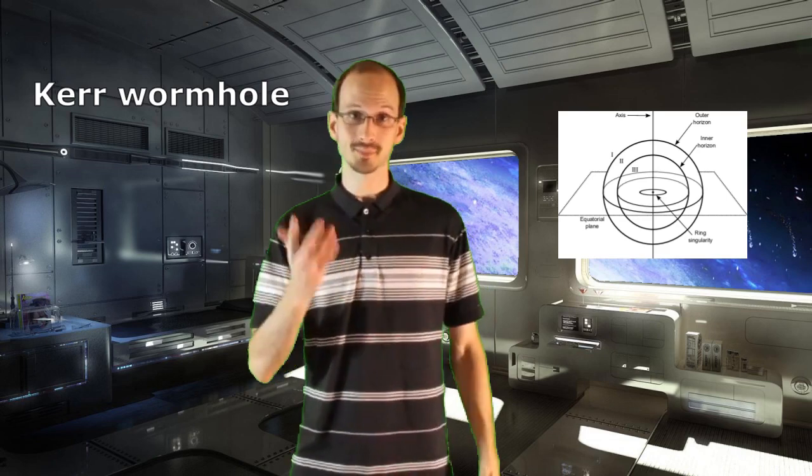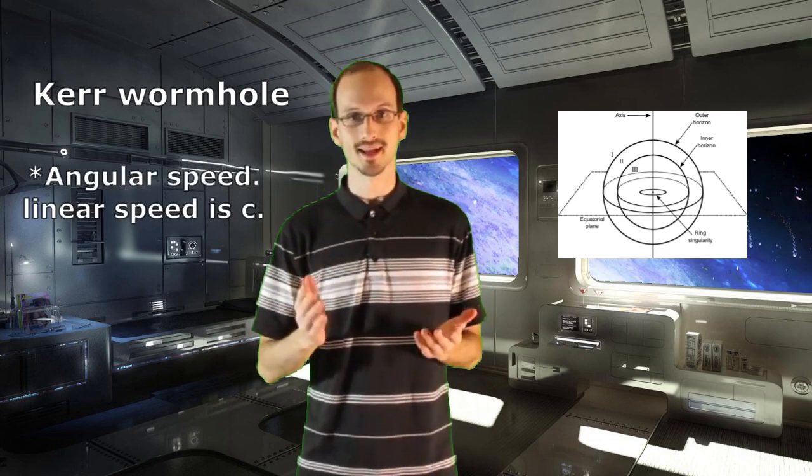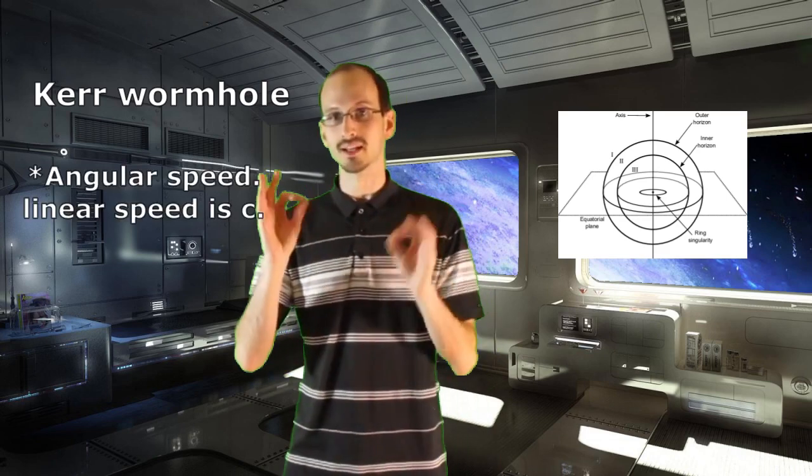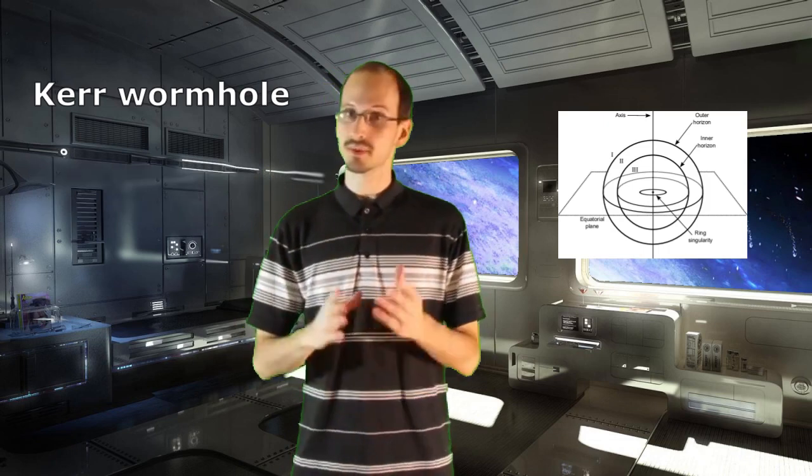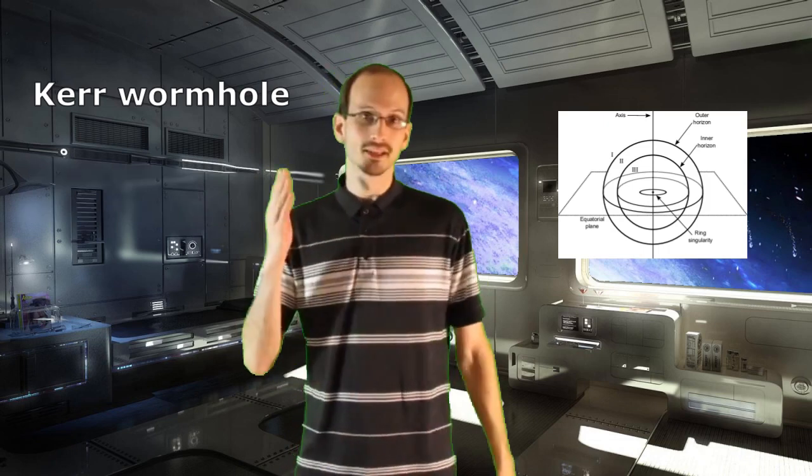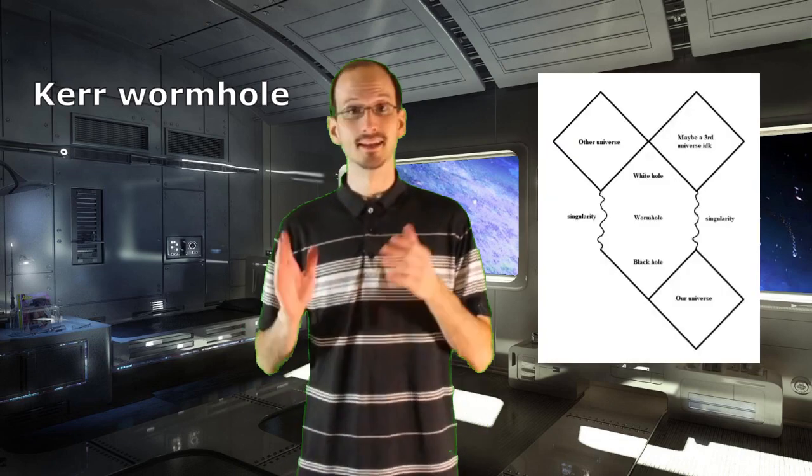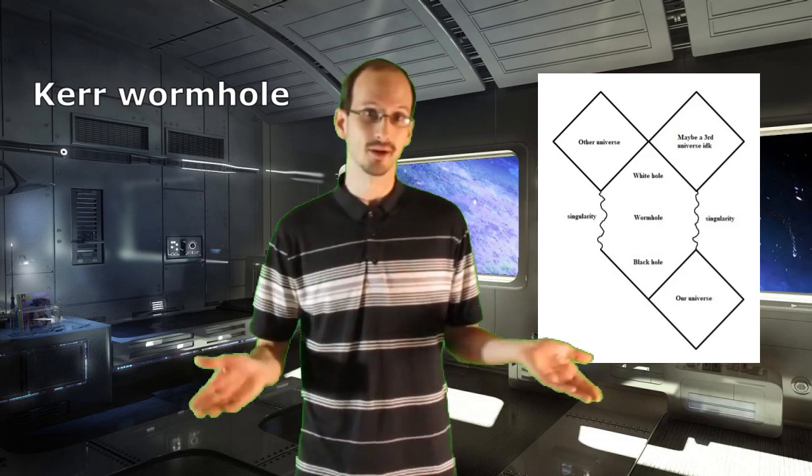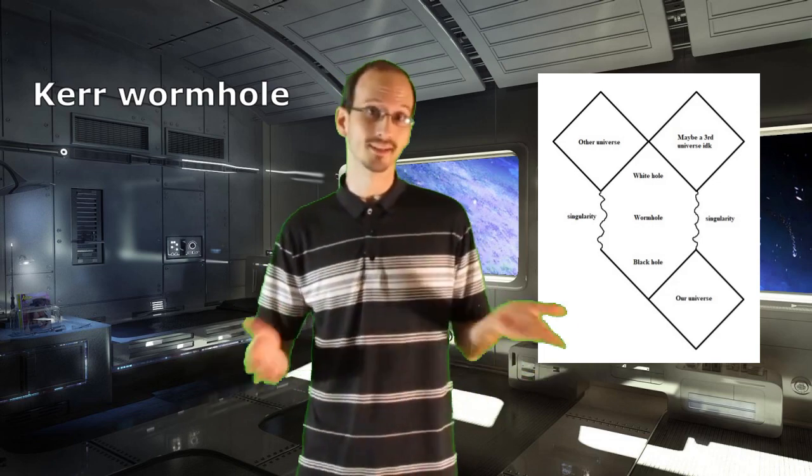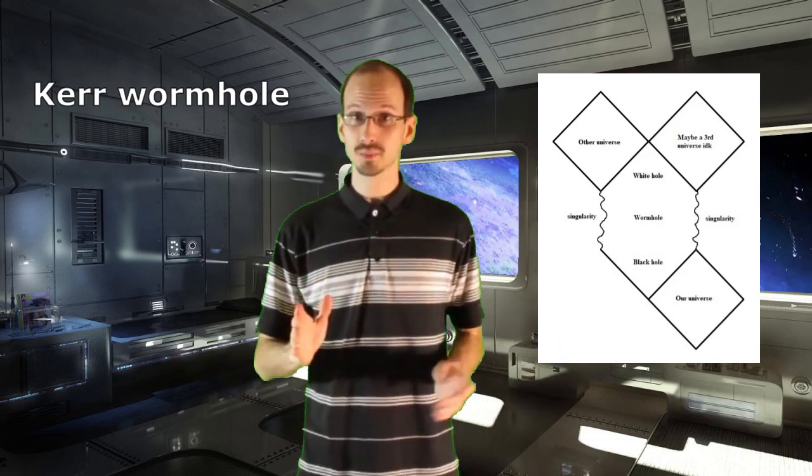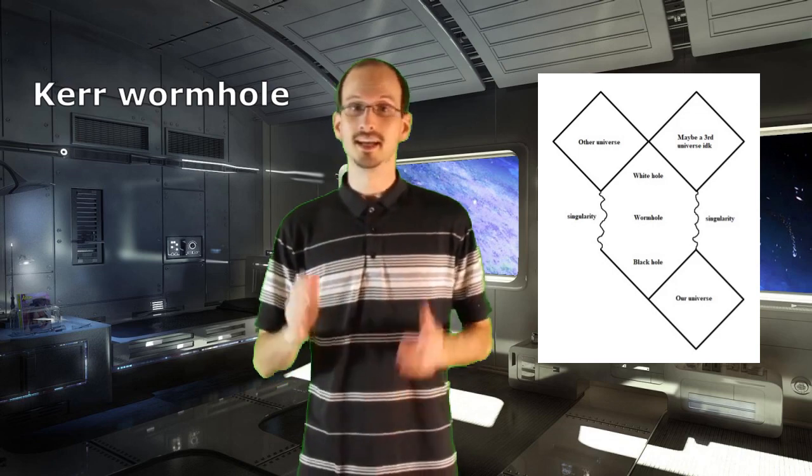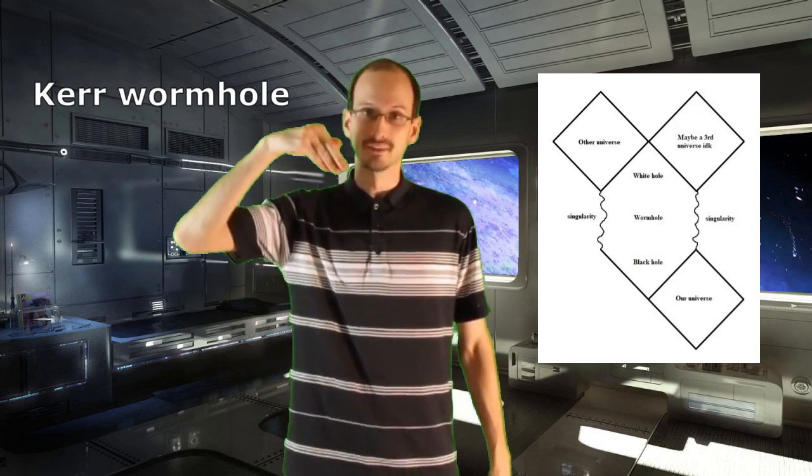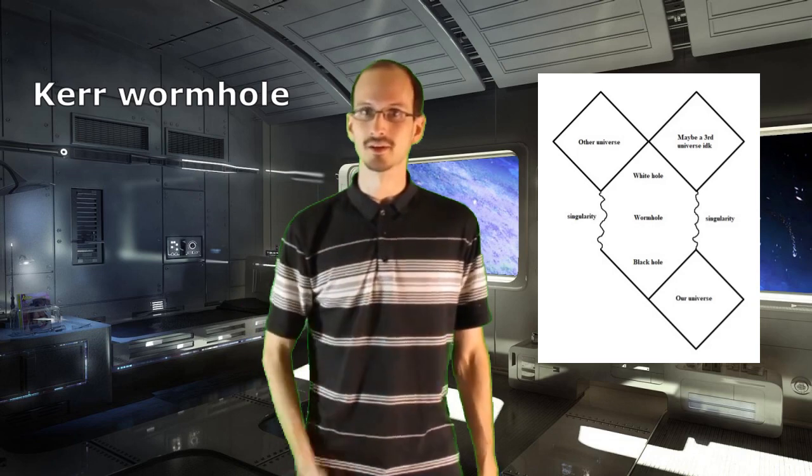The faster an object is spinning, and the more angular momentum it has, the larger that ring is going to be. So it's possible that it's large enough that you could fly a ship through it. And going through the ring singularity could put you in a white hole being spit out somewhere else in the universe, or in a different universe. Thus, a Kerr black hole could be used as a wormhole if you come at it from the pole and fly through the ring singularity.